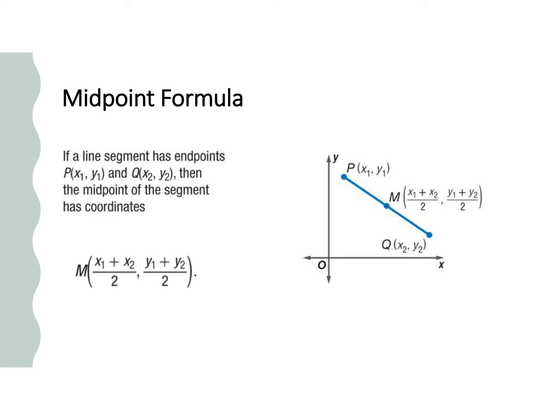The first thing is remembering the midpoint formula. If you have some line segment, let's say we have PQ here with X1, Y1, and X2, Y2, the midpoint is the average of the X's and the average of the Y's together to form that new middle point. This formula will be helpful for finding the midpoint.